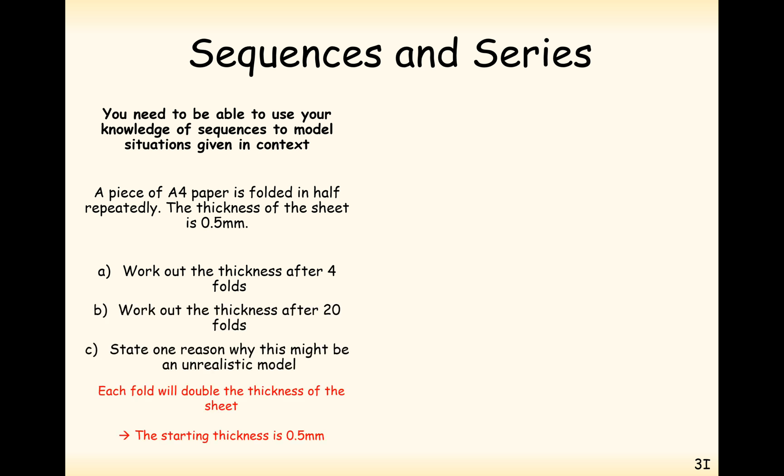In part A, we have a starting value of a equals 0.5. We have a common ratio of 2, because when we fold in half, we double the amounts of layers that we've got in our sheet of paper. After four folds, if we include the start width, then after four folds, it's going to be the fifth value in the sequence.